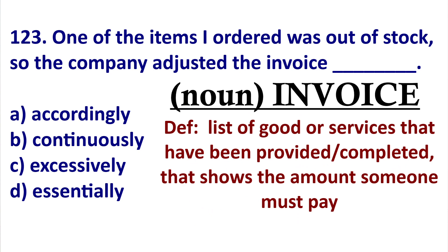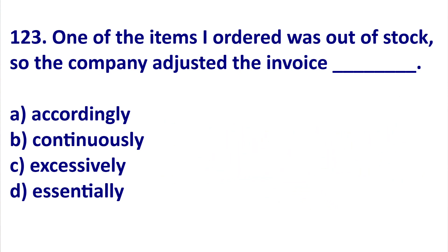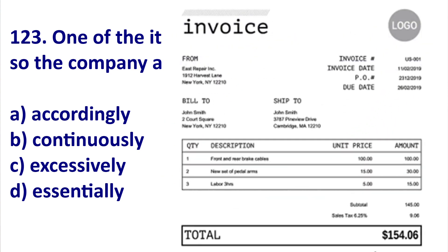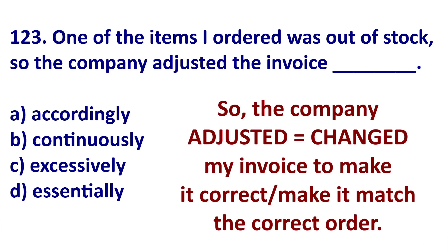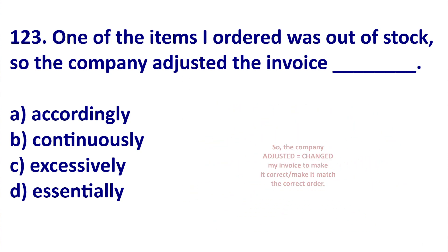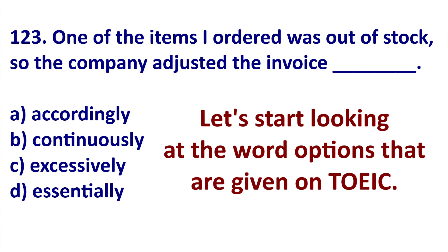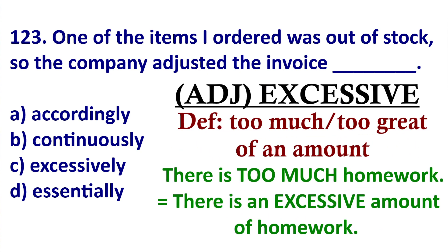An invoice is a list of goods that have been sold or work that has been done, and it shows you what you must pay. Here's an example of an invoice. So they changed my invoice to reflect the correct order. Now let's look at the adverbs given.